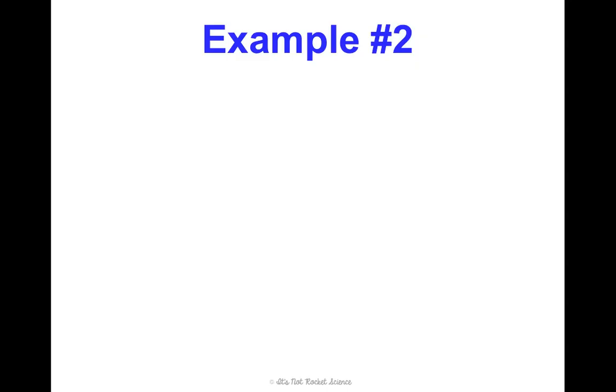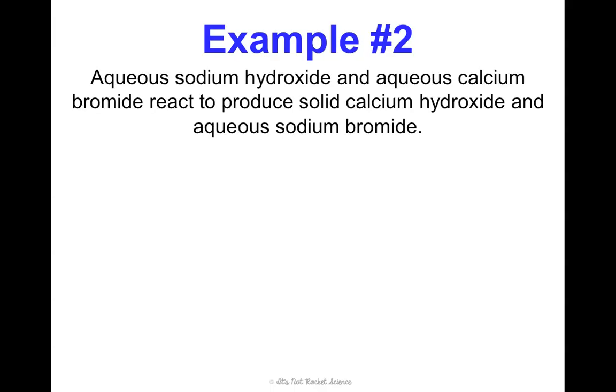Alright. Now we're going to do a harder example. This is going to combine what we learned in our last unit with this one. So this may overwhelm some of you, especially if you struggle with the last unit. And that's why it's really important we keep up with everything we learn. So aqueous sodium hydroxide and aqueous calcium bromide react to produce solid calcium hydroxide and aqueous sodium bromide.